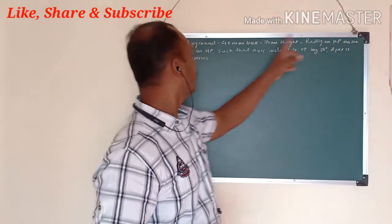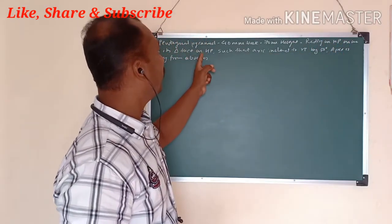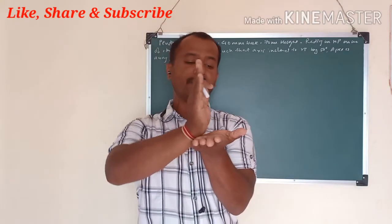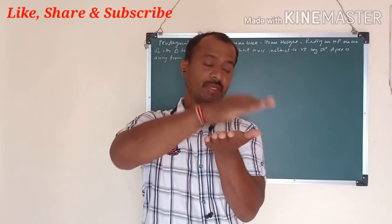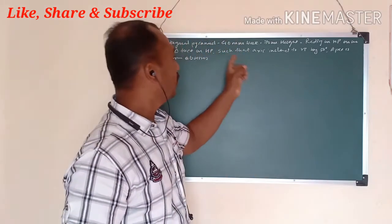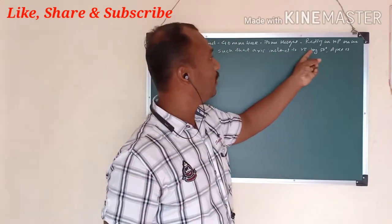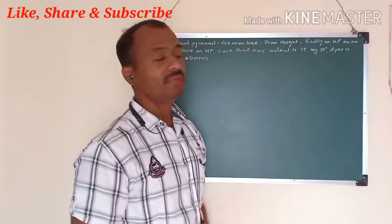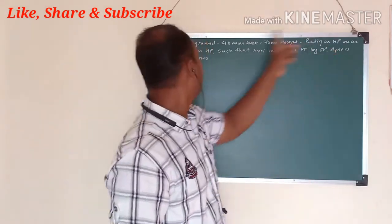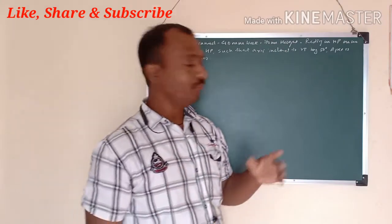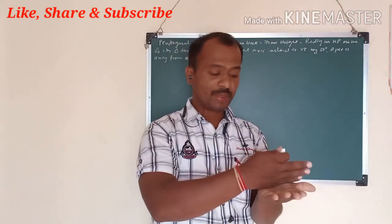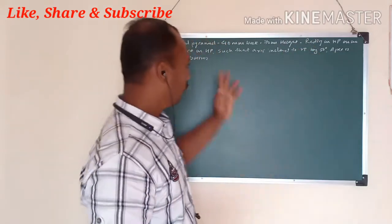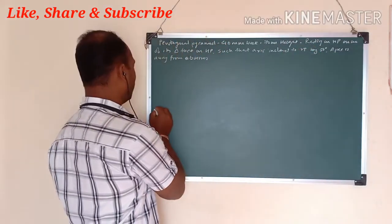In this problem, the pyramid is resting on one of its triangular faces on HP. This means the pyramid fully rests on its triangular face on HP, such that the axis is inclined to VP by 50 degrees. The apex is away from the observer — we will examine this condition in the problem.